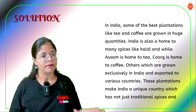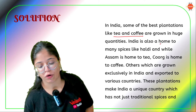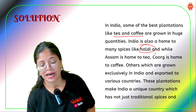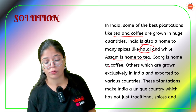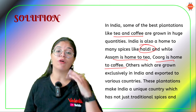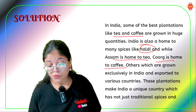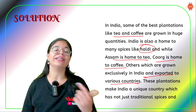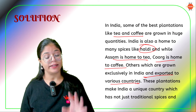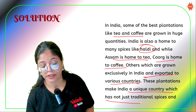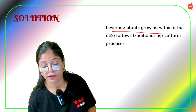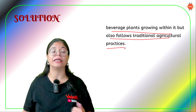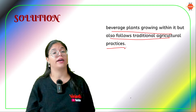Let's have a look at the answer. In India, some of the best plantations like tea and coffee exist in huge quantities. Assam's tea is very good; Coorg is home to coffee. India is also home to many spices. These products are grown exclusively and exported to various countries. These plantations make India a unique country — not only because of the traditional spices and beverage plants grown here, but also because of the traditional agricultural practices followed. It is not just what grows there that makes Assam unique, but the way it is grown.